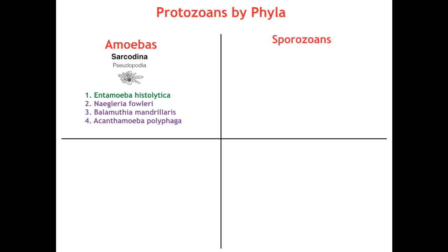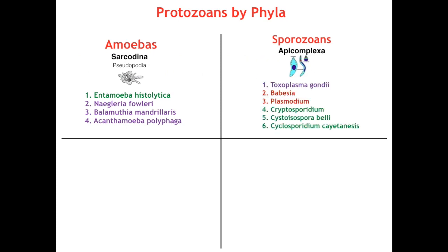Next up for our sporozones, a.k.a. apicomplexa, there are six that we need to know. Starting off with Toxoplasma gondii, second is Babesia, third Plasmodium, and our last three — who are all GI parasites — Cryptosporidium, Cystoisospora belli, and Cyclospora.